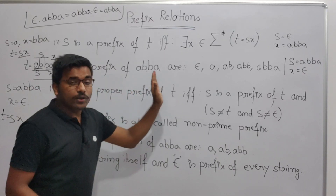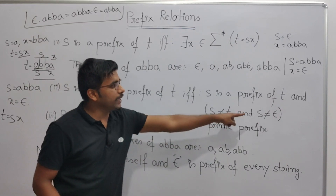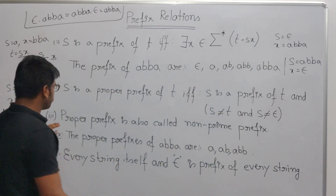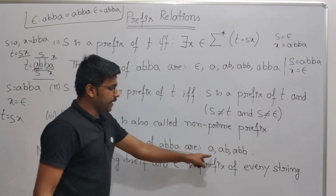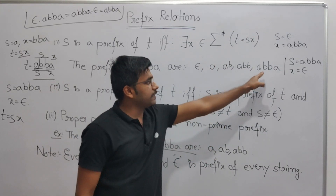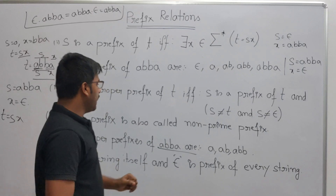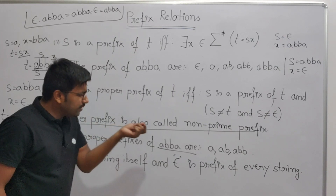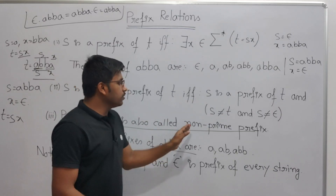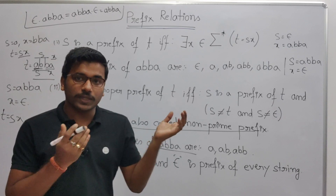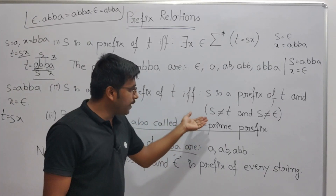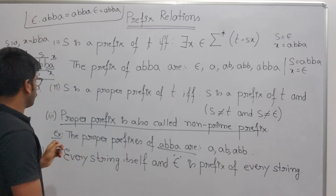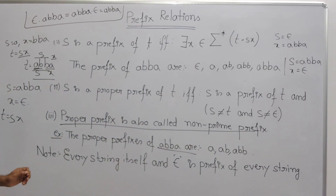Now, s is a proper prefix of t if and only if s is a prefix of t and s is not equal to t. In a proper prefix, epsilon and the string itself are excluded. So the proper prefixes of abba are: a, ab, abb — everything except epsilon and abba itself. Proper prefix is also called a non-prime prefix. This terminology is very important because GATE exams sometimes use the term non-prime prefix, and if you don't know it equals proper prefix, you will miss that question.